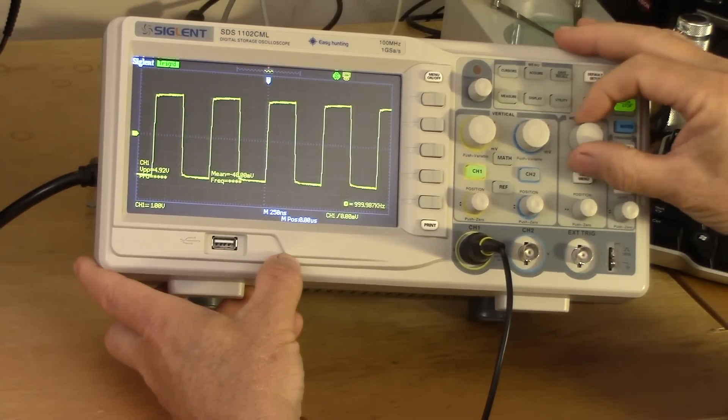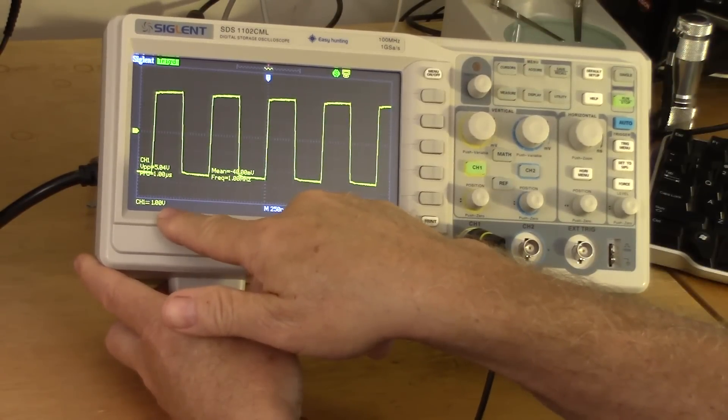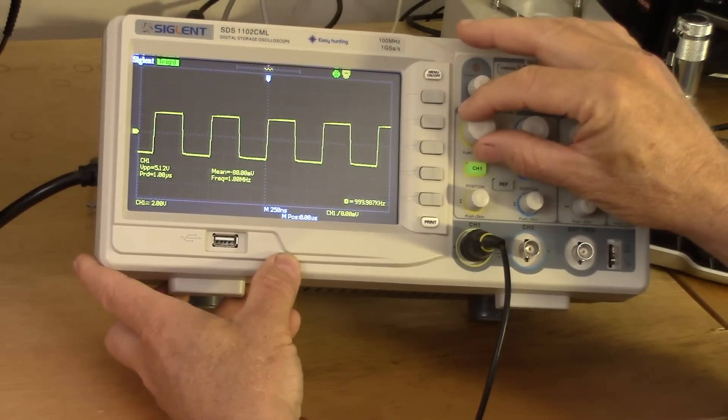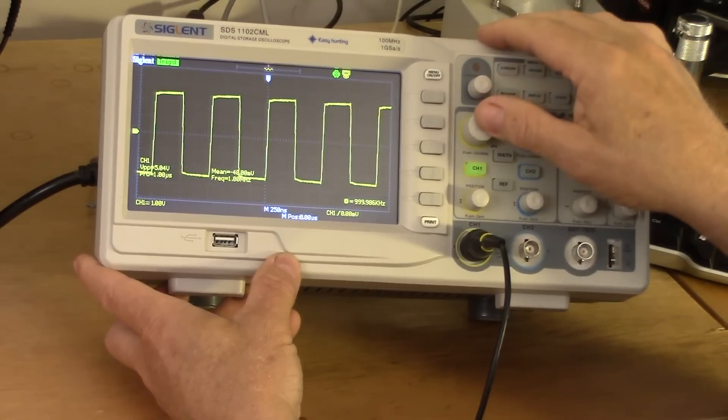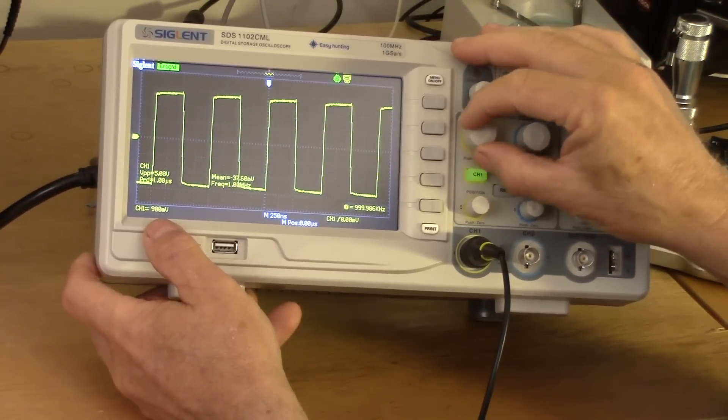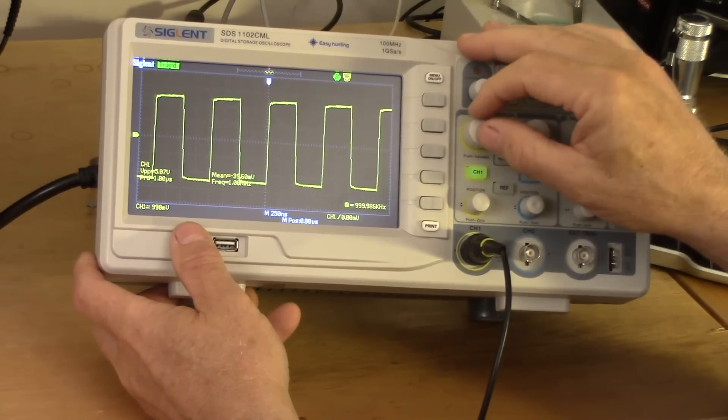If I slow this down, we can look at the vertical channel here. The vertical sensitivity is displayed there. We're at 1 volt per division. As I change the sensitivity, it goes in the standard 1-2-5 sequence like you see on most scopes. But if you press the button in, you get a fine adjustment. It changes just a little bit so you can really control how much of the waveform is displayed on the screen.